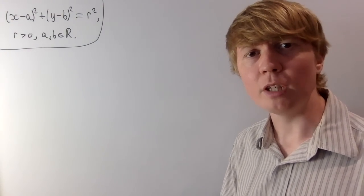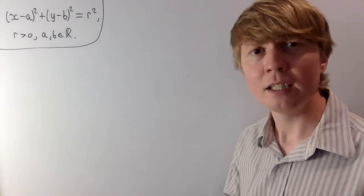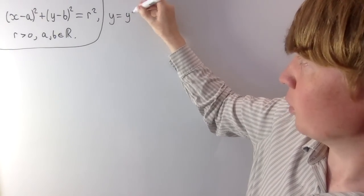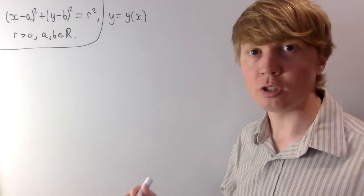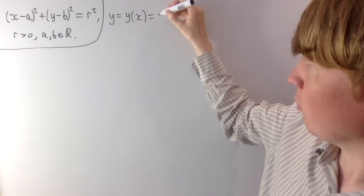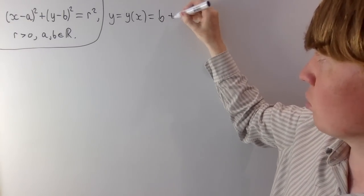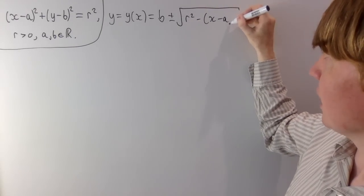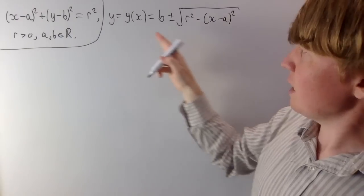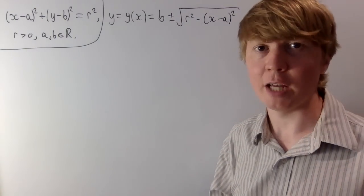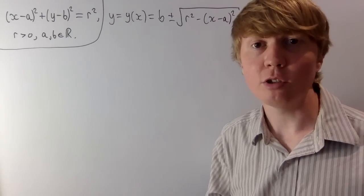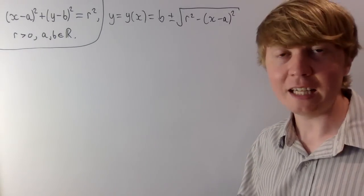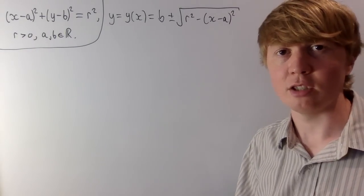Our starting point is to think of one of our variables x and y as a function of the other. Taking y as a function of x, then a, b, and r are all constants. When we rearrange, the solution should be b plus or minus the square root of r squared minus x minus a squared. You might have spotted that y isn't really a proper function of x, but we can look for solutions where one solution is the positive square root and another is the negative square root.